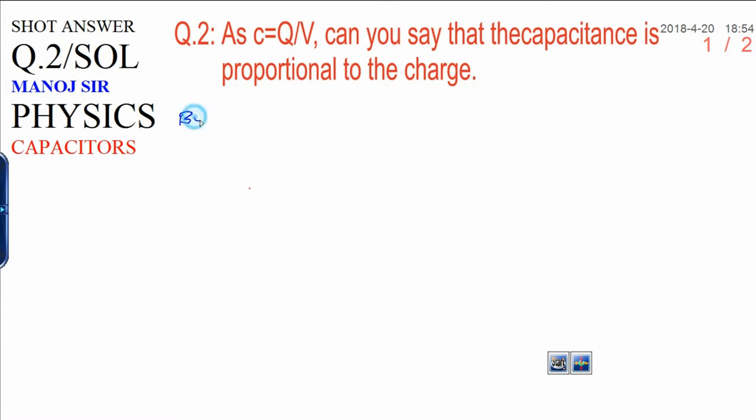First, by definition we know that Q is directly proportional to V. What do you mean by it? If you increase the charge twice, automatically potential will increase by twice. If you increase it by 3, automatically potential will increase by 3, and so on.